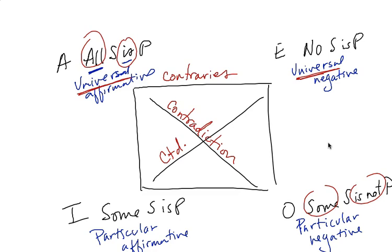And you can see that on the other side, too. The no is a universal negative, and we have some, and it's affirming some is. Okay, the relationship on the bottom is called, I'm sorry, it's subcontrary. Subcontrary.